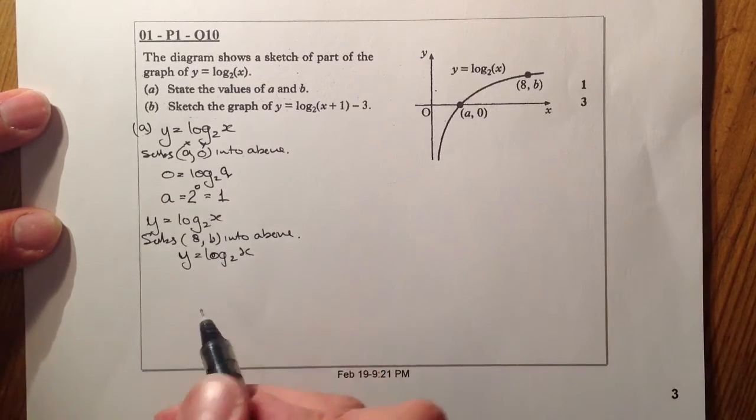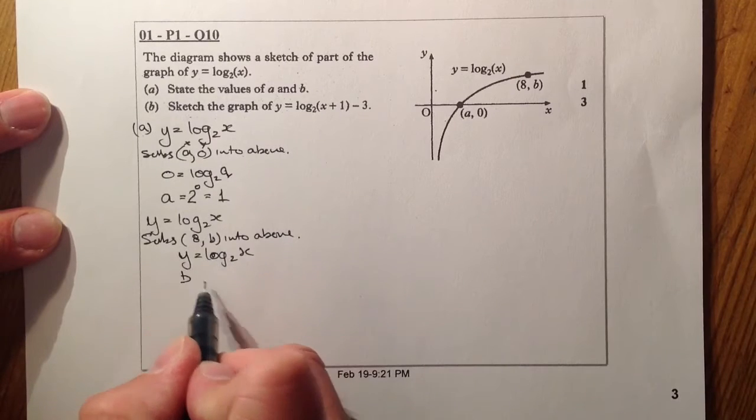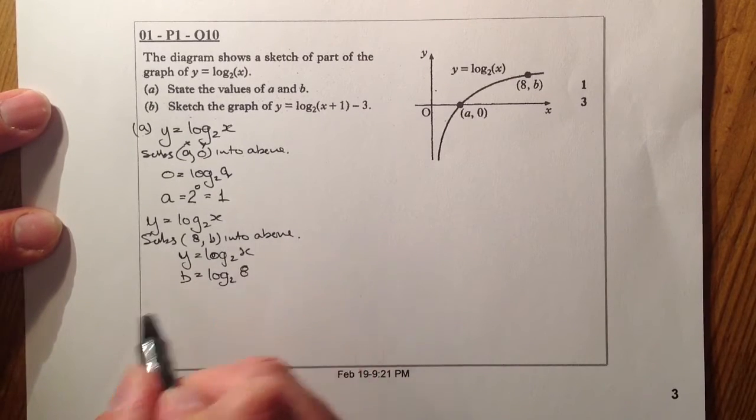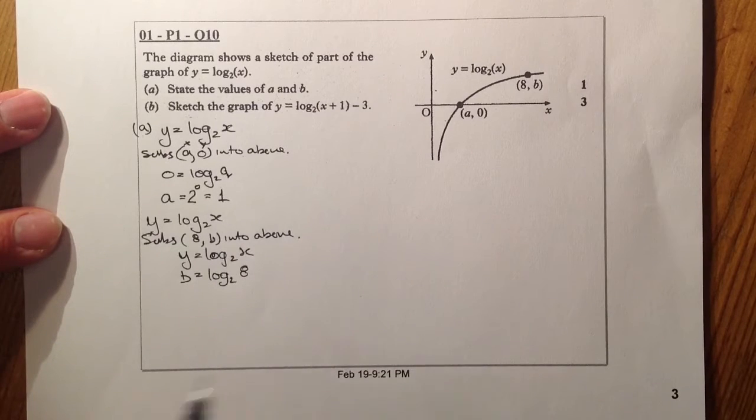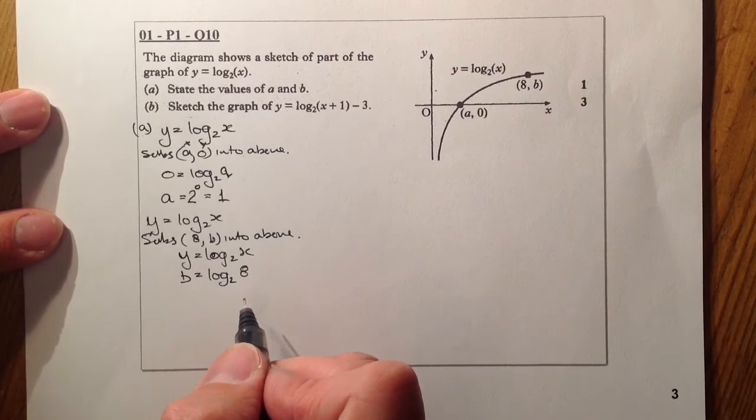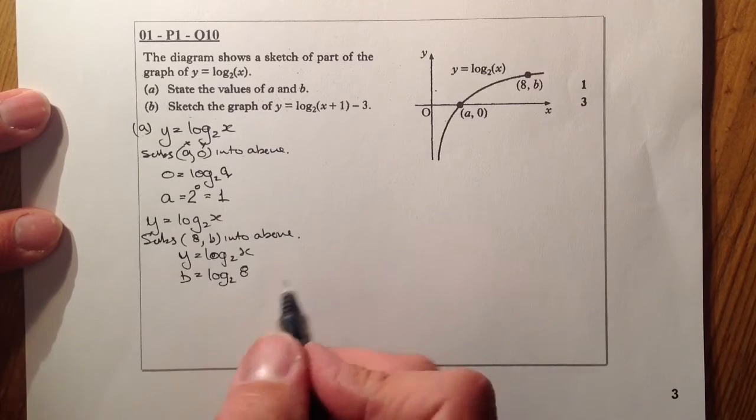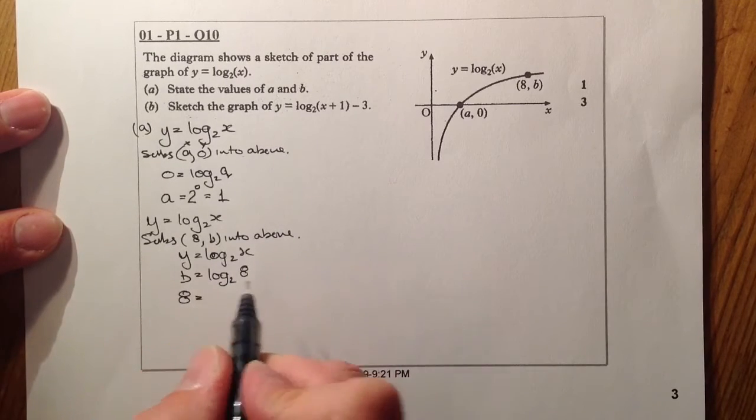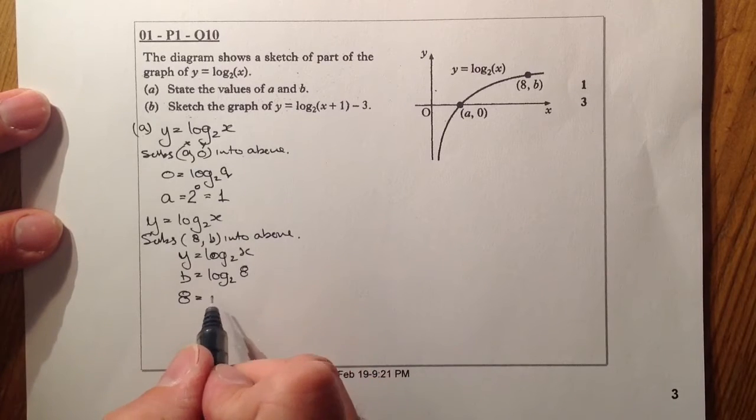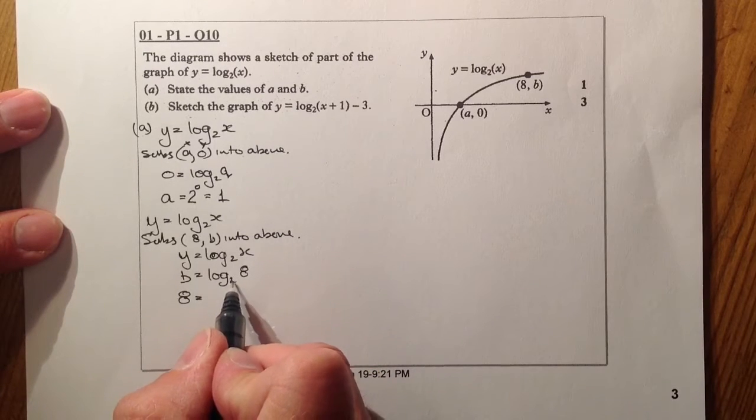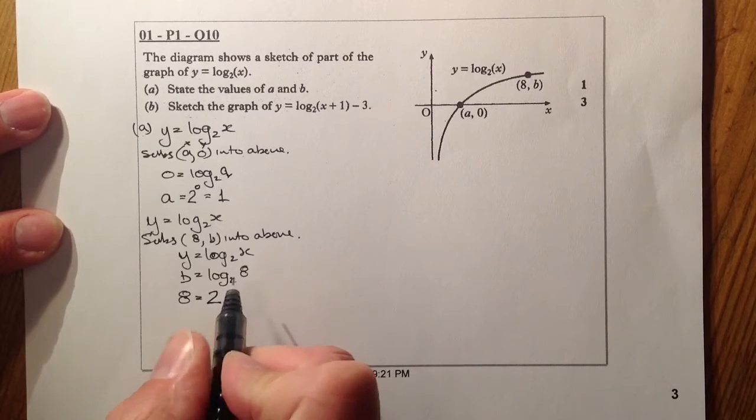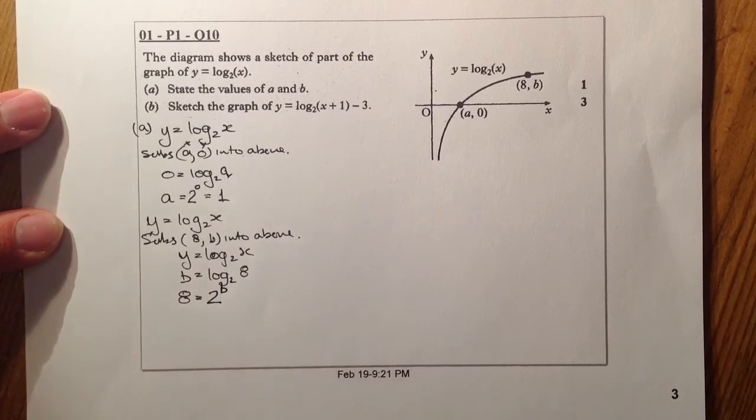So b for y equals log base 2, and that's going to be an 8 appearing there. If I just went ahead and changed that to exponential form, 8 is going to be equal to the same base, which is 2, to the power of b.